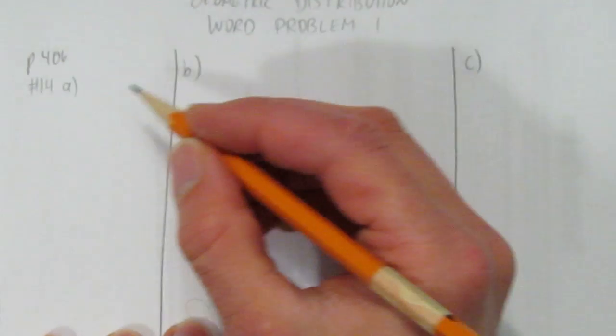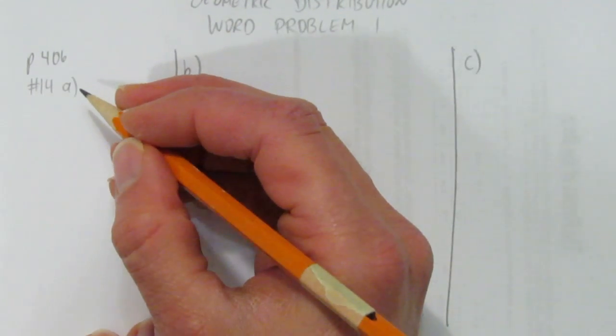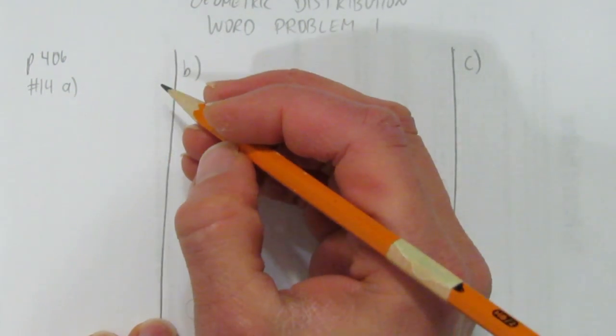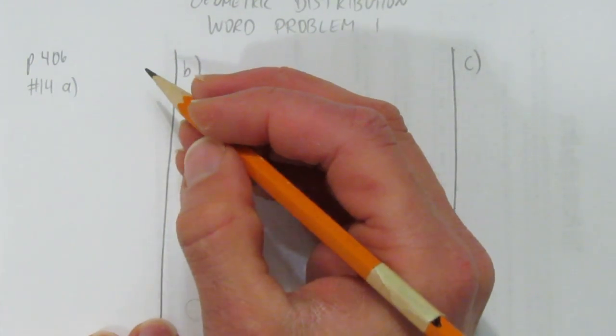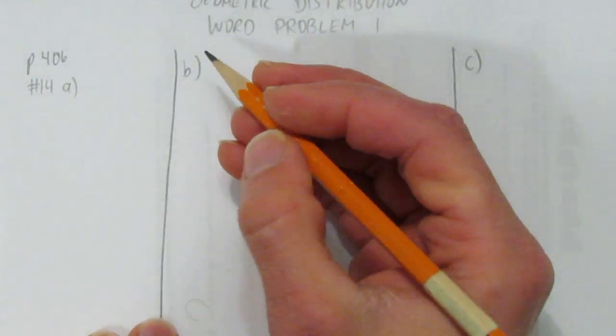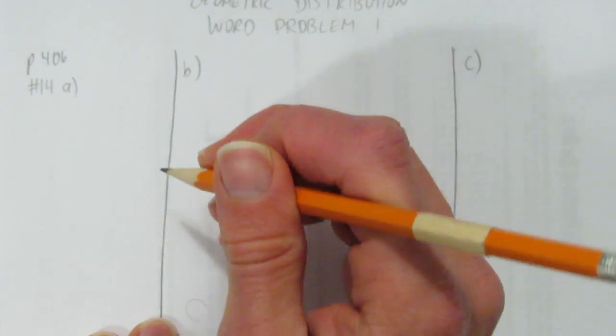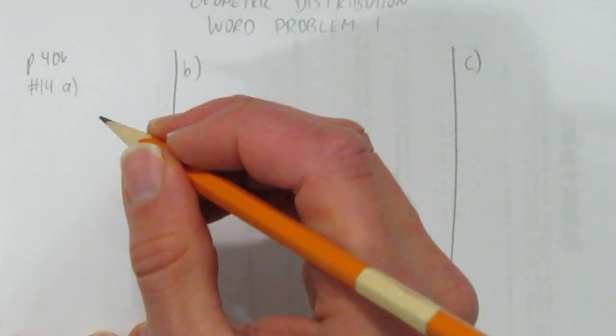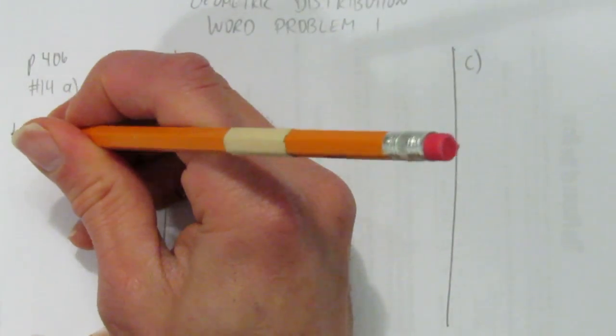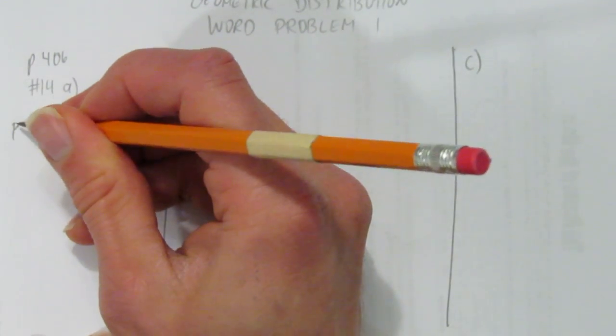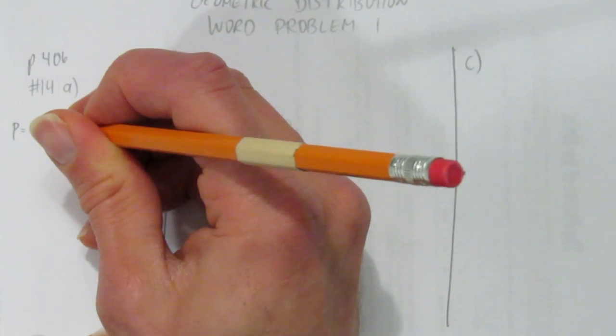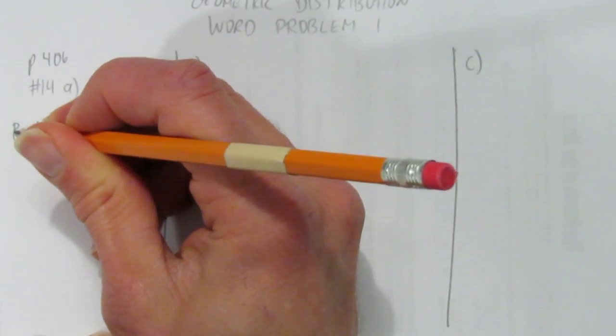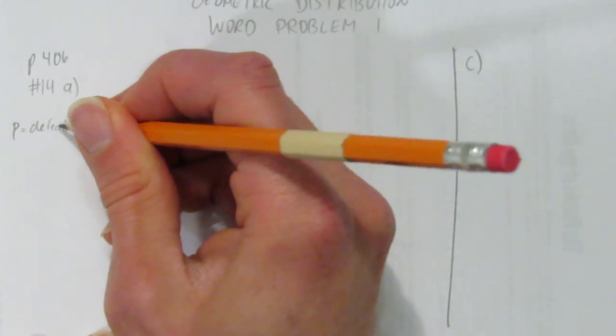For starters, before we even start to solve, here's the tricky part of this question. We're looking for the probability that the first defective circuit board appears. So ironically, or sort of inverse to how we normally think about these questions, in this case the success will be a defective board. So the probability of success, and we'll use little p, is actually a defective board. We want that defective board to be our p, that's our success.